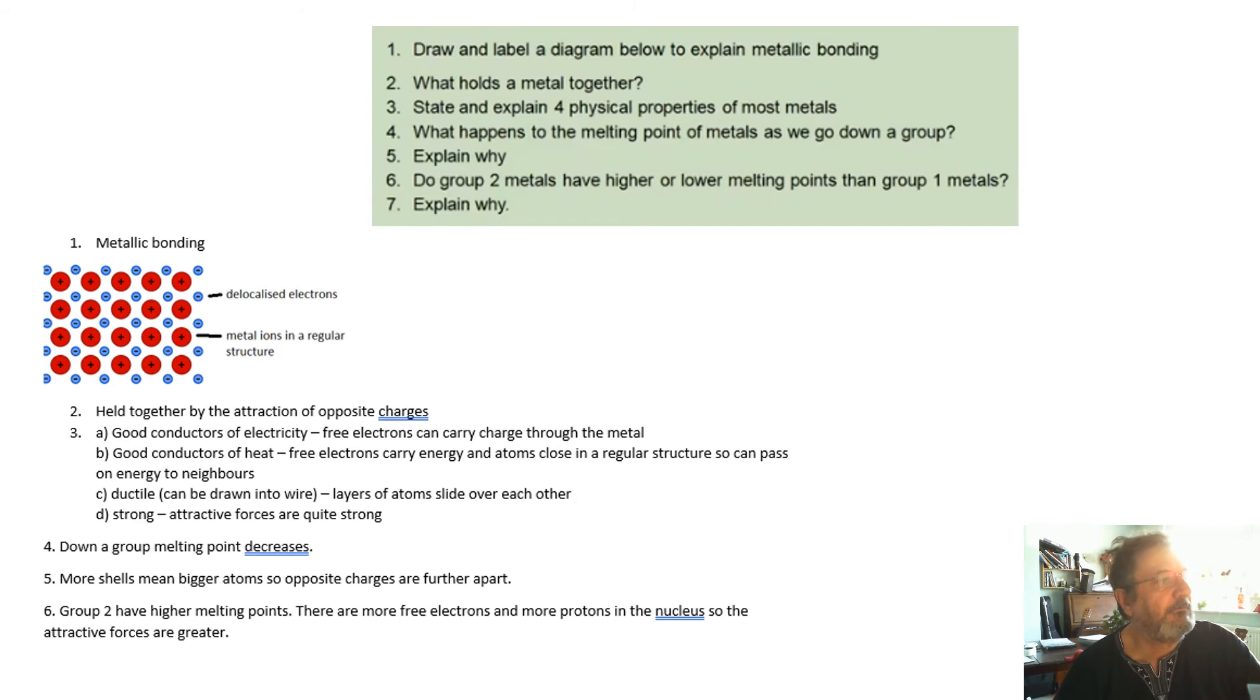Group two have higher melting points than group one, because there are more free electrons and there are more protons in the nucleus. So basically, the charges involved are bigger, so the attractive force is bigger, holding it together.